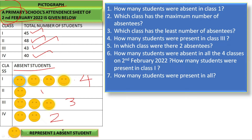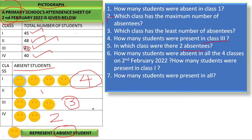One emoji represents 1 absent student. How many students were absent in class 1? — 4 students absent. Which class has the maximum number of students absent? — 1st standard. How many students were present in class 3? — 3 students were absent out of 43, so 40 students were present. In which class were there 2 absentees? — Class 4.